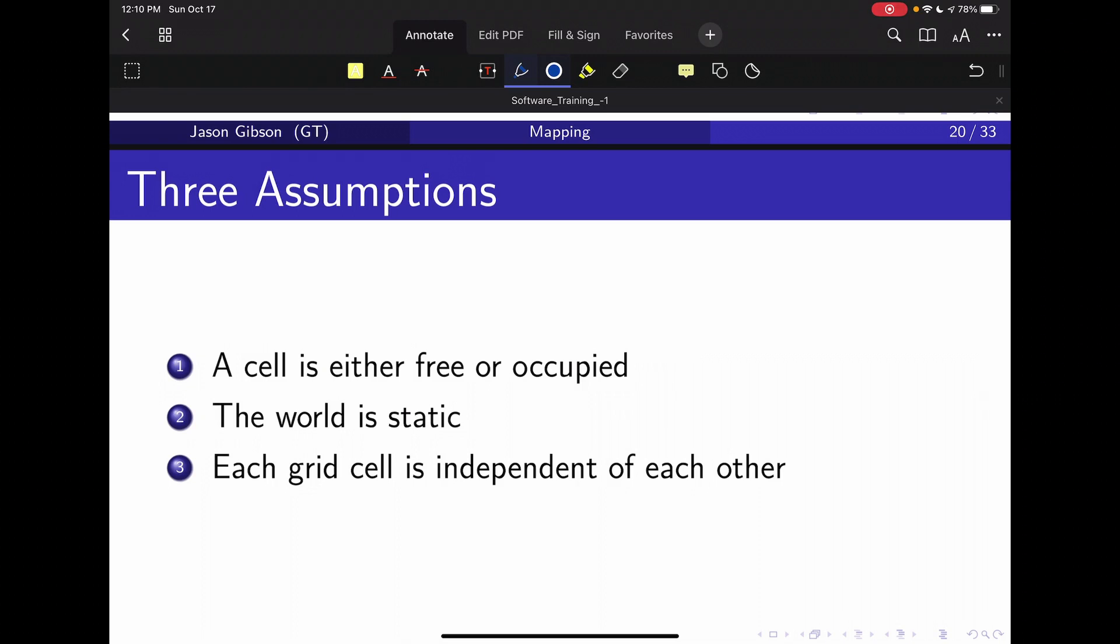The second assumption is that the world is static. That means there are no moving obstacles in the world. This isn't a hard assumption—you can get by with some moving obstacles—but to truly represent a moving obstacle just completely ruins the probability math that we have here. So it makes sense for us to assume the world is static, and if it's not, we'll handle it the best that we can.